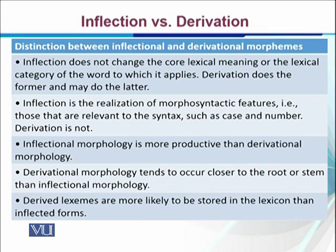What derivation does is change the meaning, and it may change the grammatical category — generally it does. However, in some cases it does not change the category. For example, if we have a noun 'king' and we make 'kingdom,' it remains a noun. So there are instances where the category stays the same, but the meaning changes.